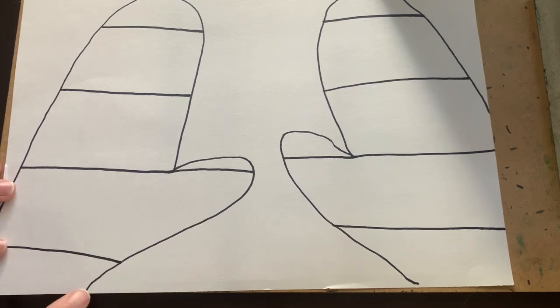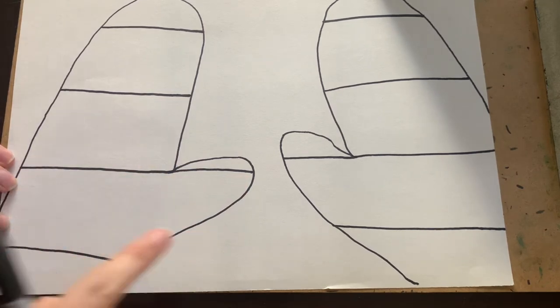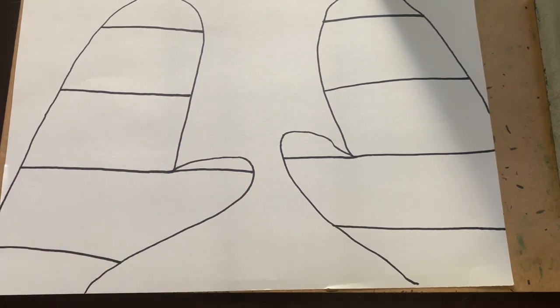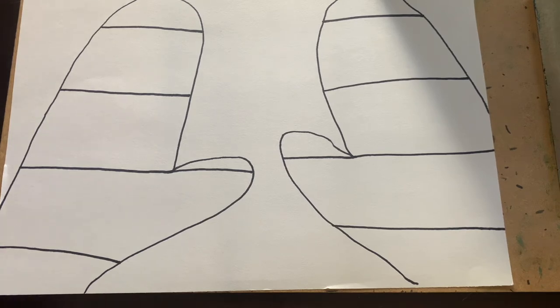All right, now that I have the outline and I have my lines, the next step is to fill in some patterns. But first, think really hard. What is a pattern? A pattern is something that repeats over and over again. Now, it could be numbers, it could be shapes, it could be colors, but it's something that repeats over and over again.